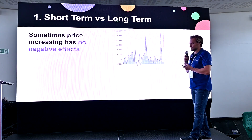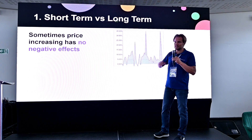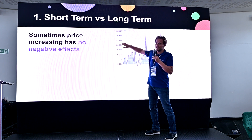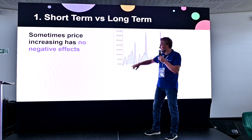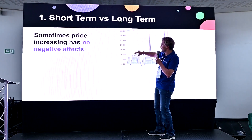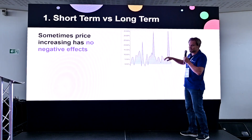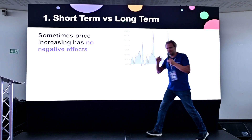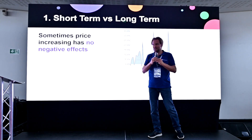This is a real graph of growth. We have many products, and this is one of them. This is MRR — monthly recurring revenue. Growth was like 5%, 10%, 15%, 30%, then 3%, 5%, and then we made big changes — 30% MRR growth per month. Some services are still growing like this.